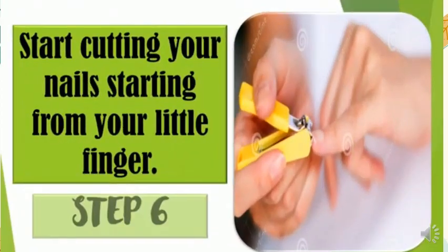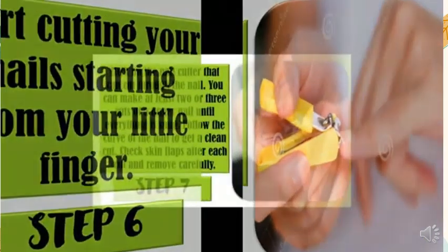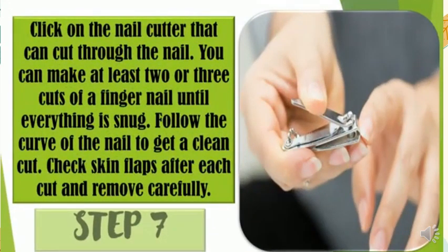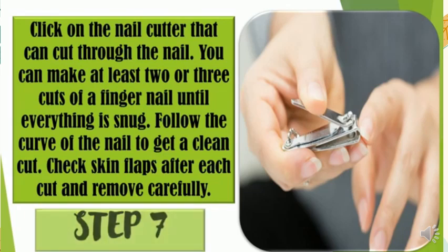Step 6 — start cutting your nails beginning from your little finger. Step 7 — press on the nail cutter so that you can cut through the nail. You can make at least 2 or 3 cuts per fingernail until everything is trimmed. Follow the curve of the nail to get a clean cut. Check for skin flaps after each cut and remove carefully.